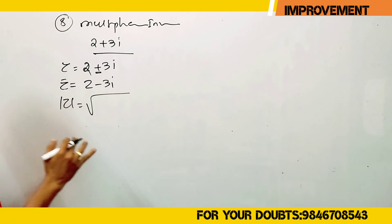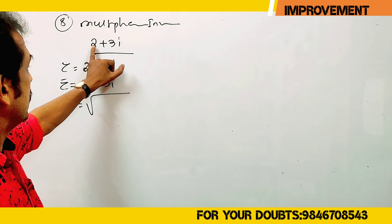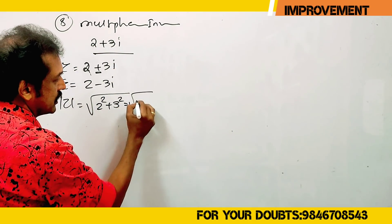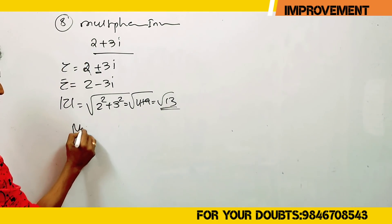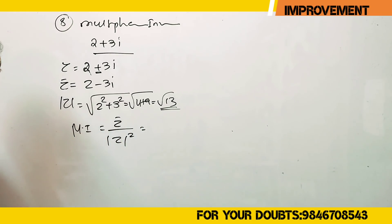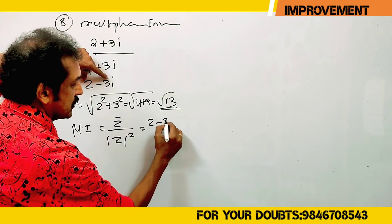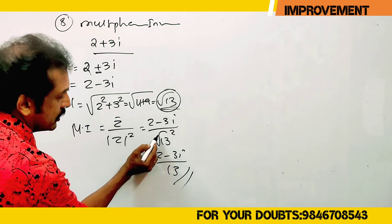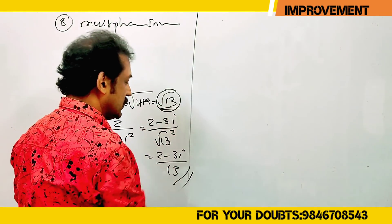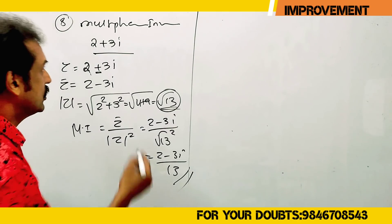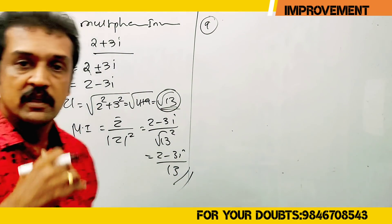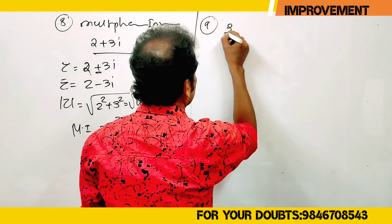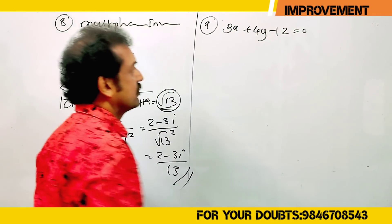Find the modulus of z: modulus of z squared equals 2 squared plus 3 squared equals 4 plus 9 equals 13. The multiplicative inverse formula is z-bar divided by modulus of z squared. So the answer is (2 minus 3i) divided by 13.